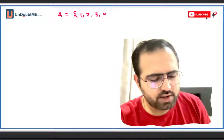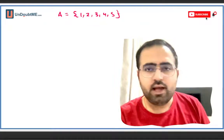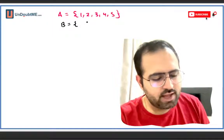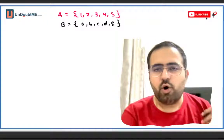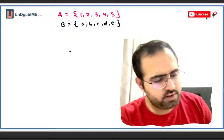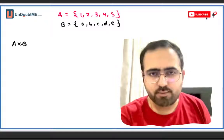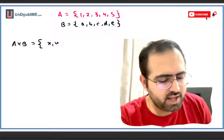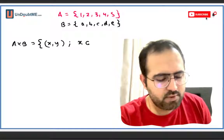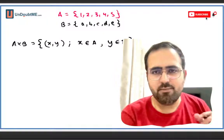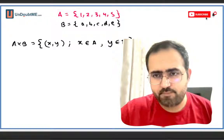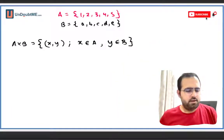In mathematics, the whole story of relations and functions starts from sets. Let's say I have a set A with elements 1, 2, 3, 4, and 5, and another set B with elements a, b, c, d, and e. On these two sets we define a product, also called A cross B. A cross B is defined as the set of pairs (x, y) where x belongs to the first set and y belongs to the second set.